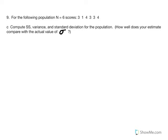Continuing with Number 9, Part C says: compute SS, variance, and standard deviation for the population. How well does your estimate compare with the actual value? I'm going to solve this using both the definitional and computational formulas so we can see how both are applied. I tend to use the computational more readily because it is faster, but we should know both.